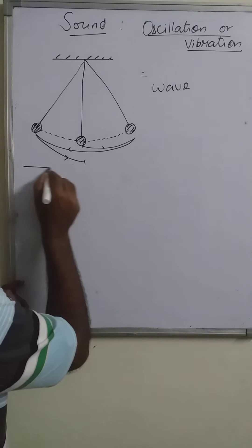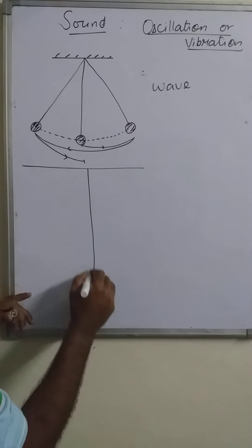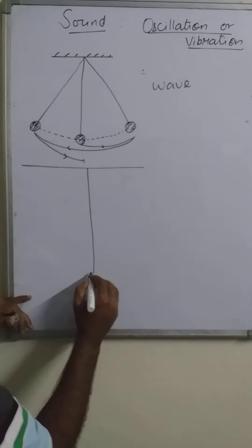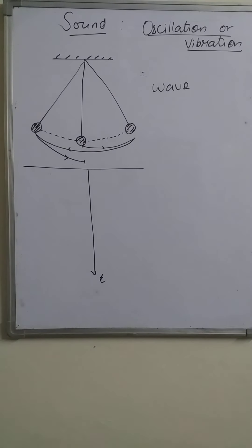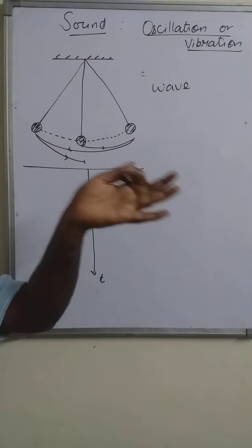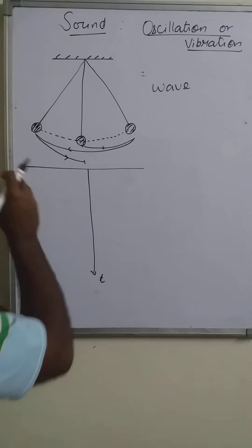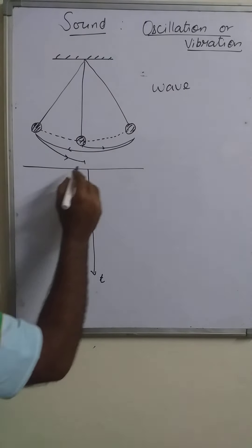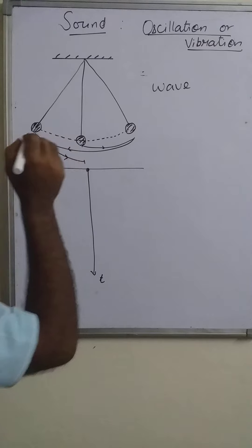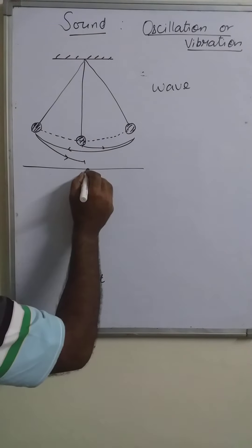We use two axes: the time axis and the displacement or distance axis, as we discussed about this graphical representation last year. Taking these two as our axes — time axis and displacement axis — we can see that the bob is at the mean position.